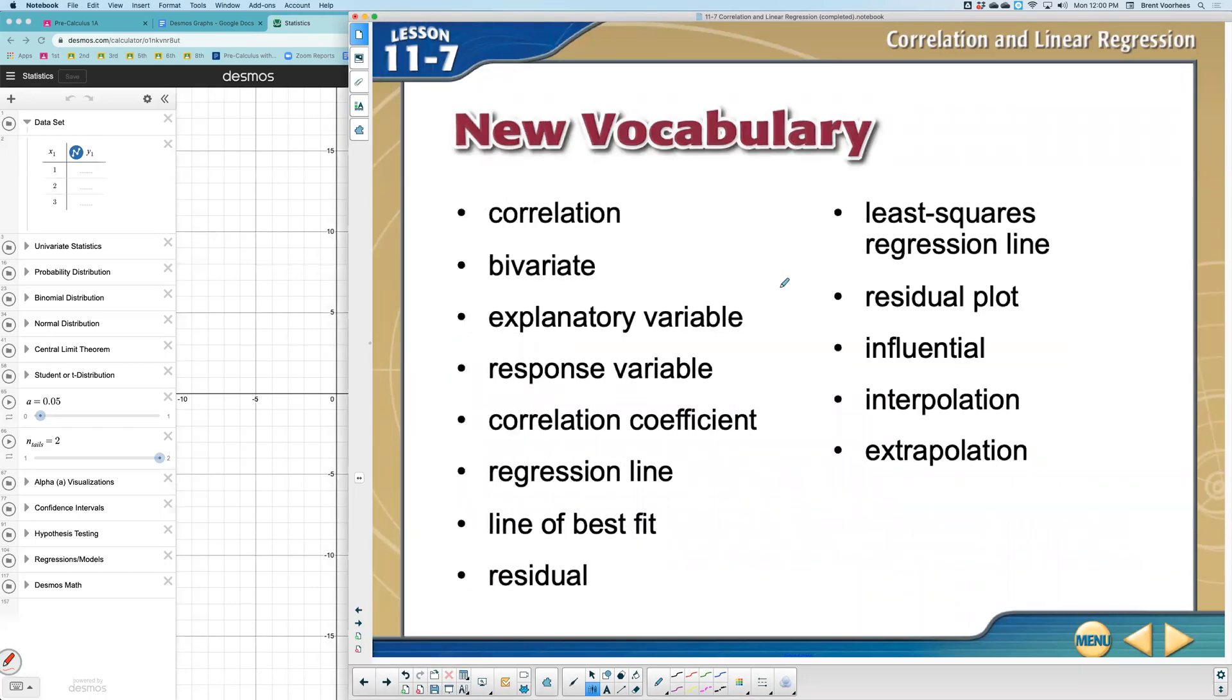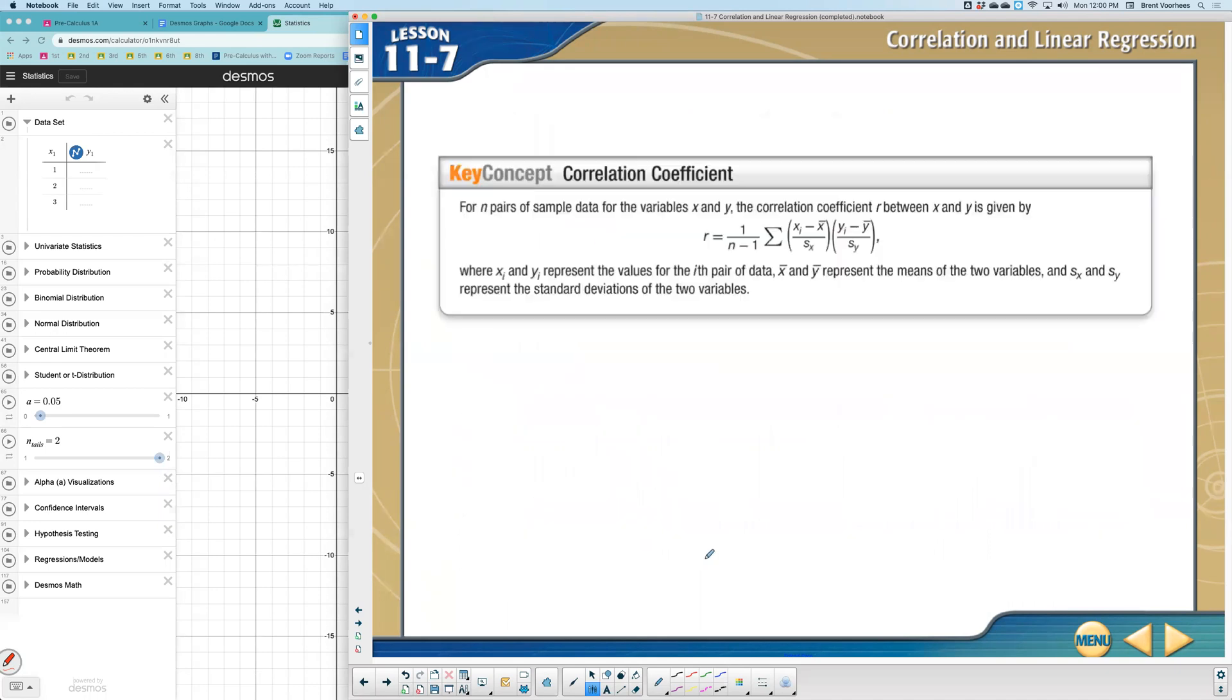All right. So let's talk about linear regression. There's going to be all these different words, but there's only a few of them that I'm really going to spend a lot of time on. First is the correlation coefficient. It's represented by the letter R.